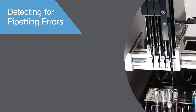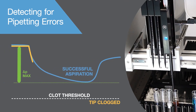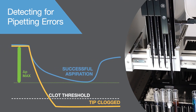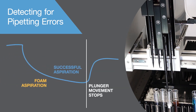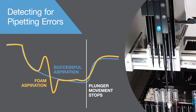Clots are detected during an aspiration step when the vacuum pressure exceeds the predefined threshold. Foam can make it difficult for a pipet channel to detect the surface of the liquid. If the channel begins to aspirate foam, spikes in the pressure curve are detected.